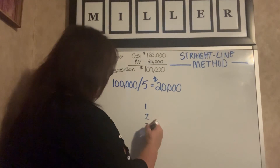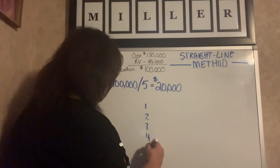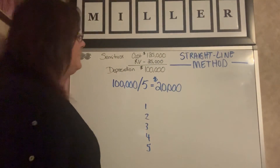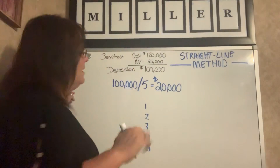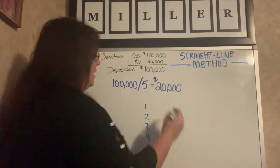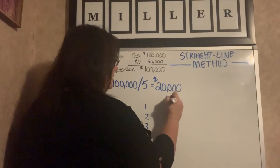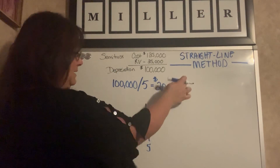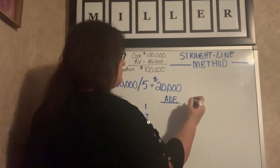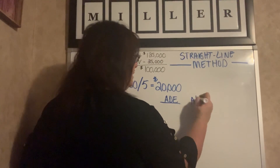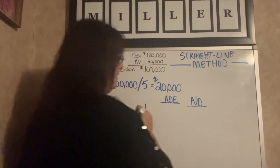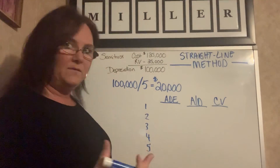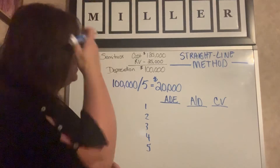We have year one, year two, three, four, and finally five. We're going to have three columns in our chart. We're going to have annual depreciation expense — which is how much we're expensing — then accumulated depreciation, which is just an add-up for every year, and then a column called carrying value, which is basically the market value of our asset as we go along.